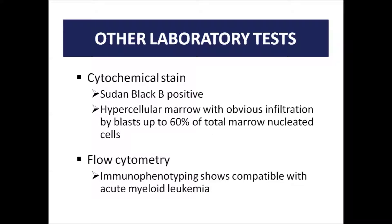For the other laboratory tests, the cytochemical stain shows that the Sudan Black B is positive. It is a hypercellular marrow with obvious infiltration by blasts — up to 60% of total marrow nucleated cells. As for flow cytometry, the immunophenotyping shows that it is compatible with acute myeloid leukemia. Overall, all laboratory diagnoses confirm that this patient is diagnosed with acute myeloid leukemia.